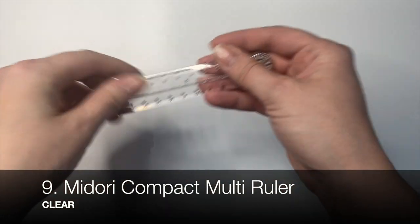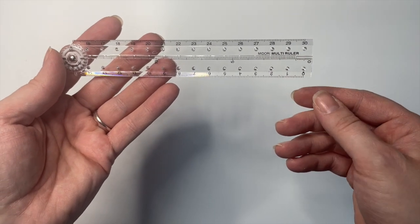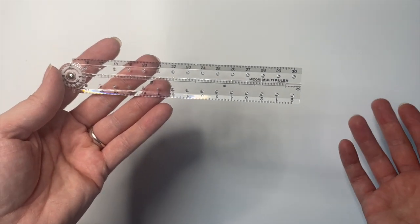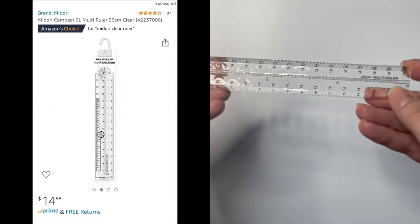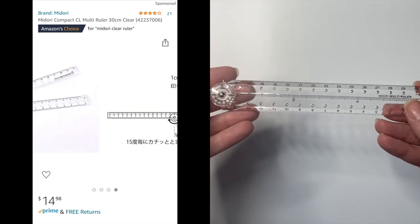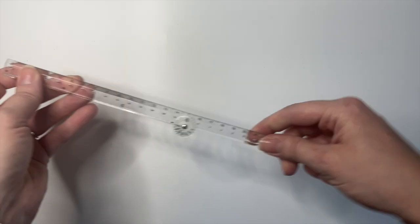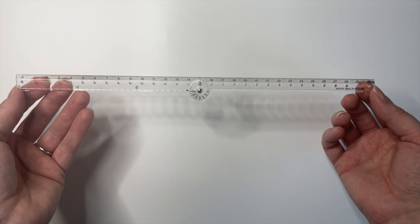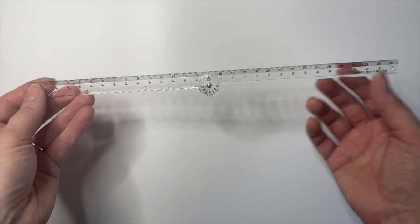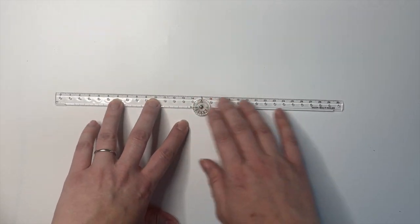Next, I'm going to talk about this ruler. This is a Midori multi-ruler. And I think these come in different colors. I like the clear one. What I really like about this is that it has a small footprint, so you can easily carry it in a pen case, like 15 centimeters across, but it can fold out to a full 30 centimeters, which is really nice.